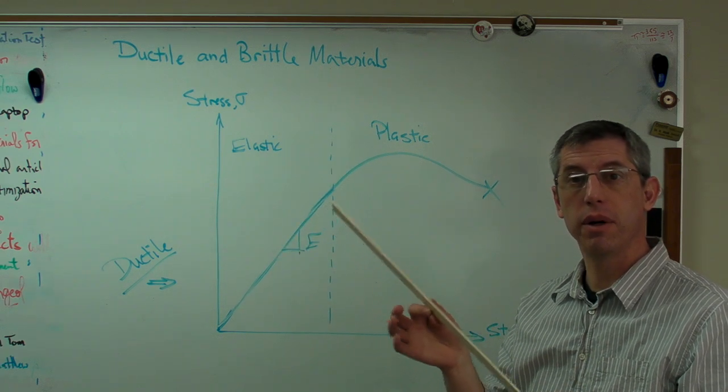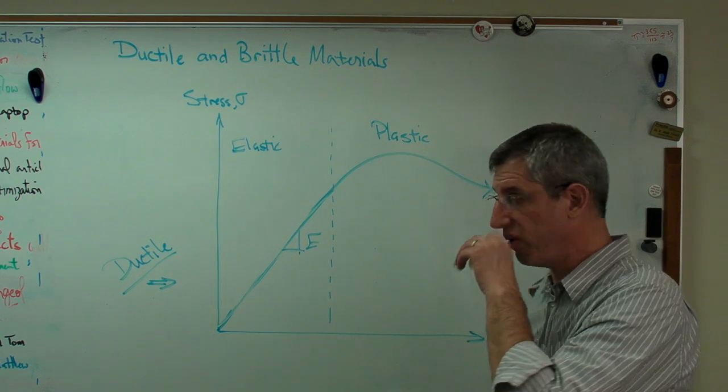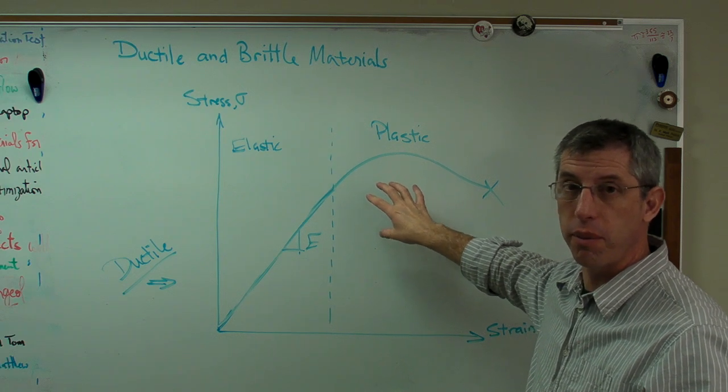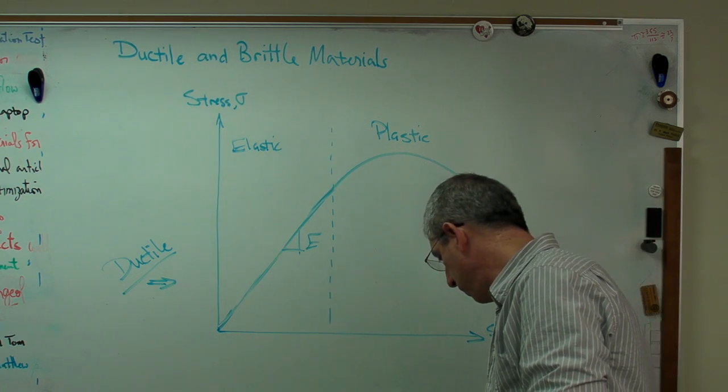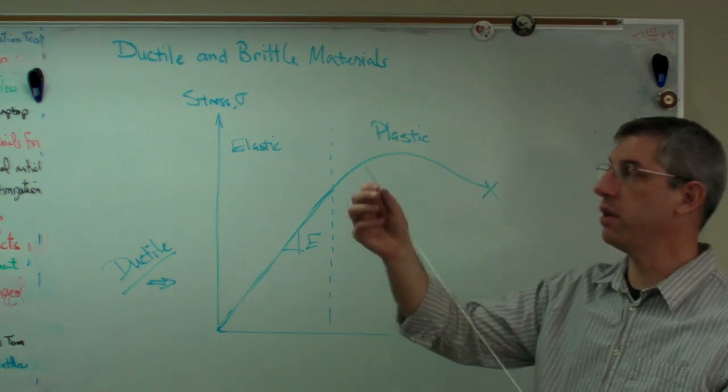Elastic means it goes back to its original shape after the load is released. Load goes away, plastic deformation means there is permanent deformation. When the load is released it doesn't go back to its original shape.